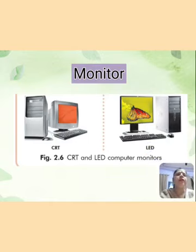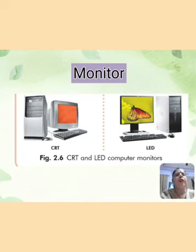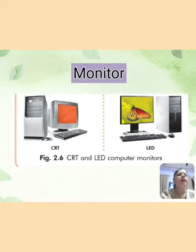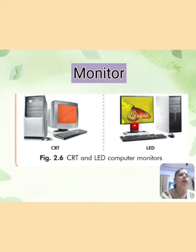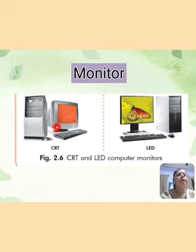Our first output device is monitor. Monitor displays all the results — we can see all results on the monitor screen. We have two types of monitors: CRT and LED. CRT monitors consume more power, while LED monitors consume less power. CRT monitors take more space, while LED monitors take less space. CRT monitors are heavy, while LED monitors are light in weight.